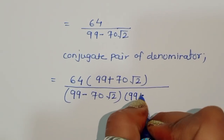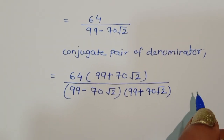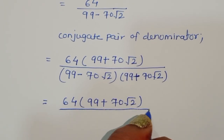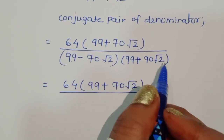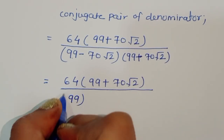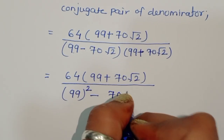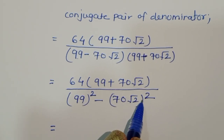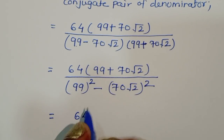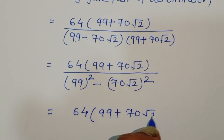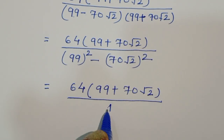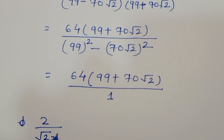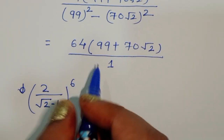Multiplying numerator and denominator by the conjugate 99 plus 70 square root of 2, we get 64 times (99 plus 70 square root of 2) divided by 99 squared minus (70 square root of 2) squared. Solving the denominator using the identity (a - b)(a + b) = a² - b², the value simplifies to 1.